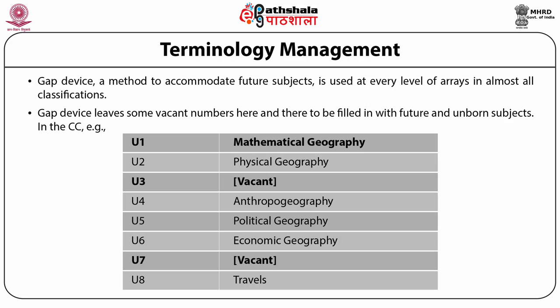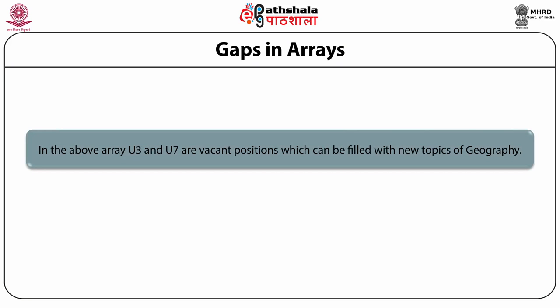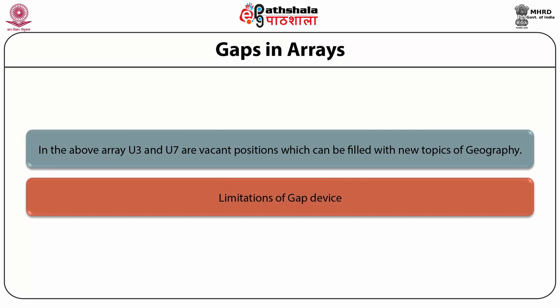But the gap device has a problem: gaps cannot be left forever. A day may come when the gaps are filled, at least in the first-order arrays. A second problem is that a subject may emerge but the gaps already left may not be the proper places for it. A classificationist may then try to forcibly place the new subject at a vacant place, and this will of course distort the structure of classification, as has already happened in the Dewey Decimal Classification. In the above example, U3 and U7 are vacant positions which can be allocated to new topics or new branches of geography, but I have already explained the logical and time limitations of the gap device.